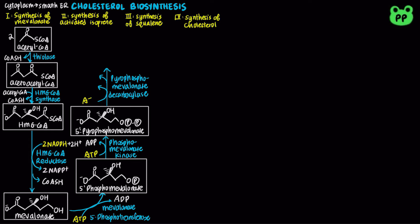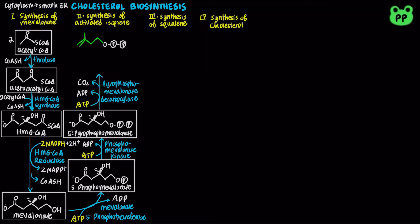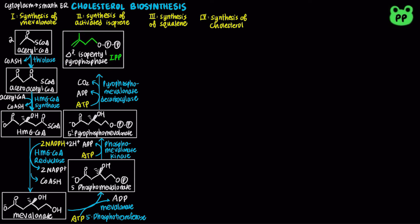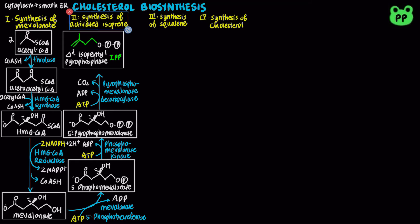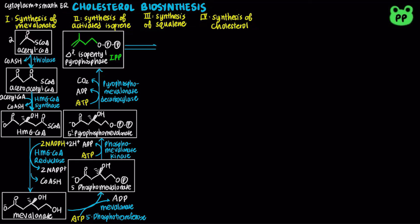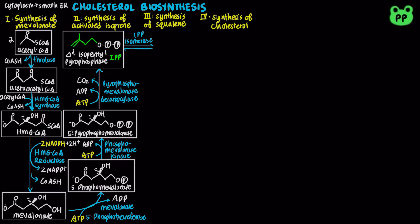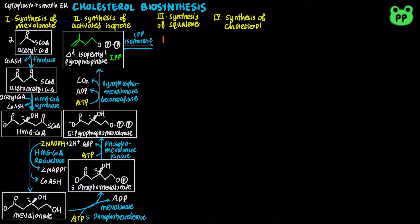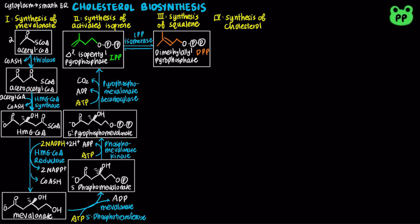Both the phosphate and nearby carboxyl group leave, forming carbon dioxide and delta-3-isopentenyl pyrophosphate, abbreviated as IPP, which is known as activated isoprene, contains 5 carbons, and also serves as a precursor to other isoprenoids. IPP can also isomerize to another activated isoprene known as dimethylallyl pyrophosphate, abbreviated as DMAPP.